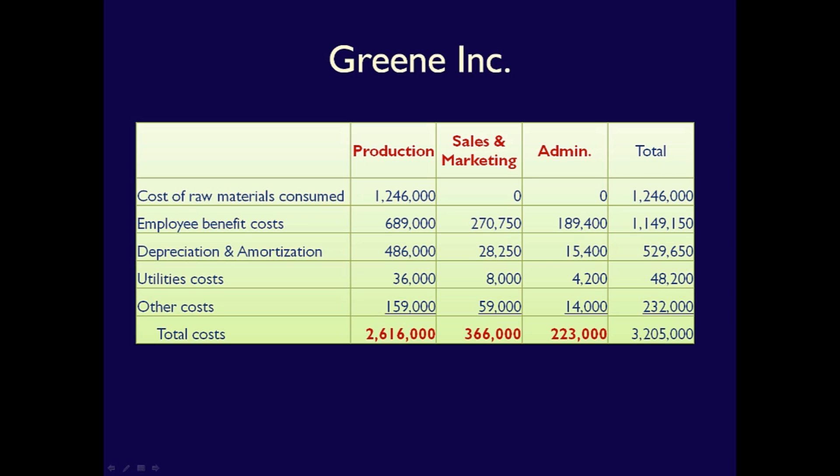As you can see, expenses by function can be thought of as expenses by departments within the business. For example, cost of goods sold is made up of all the expenses used or consumed by the production department when they are producing goods.